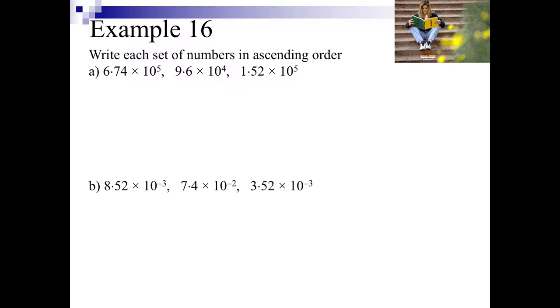So I want you to write these in ascending order. So one of the things that you can look at, there's two different ways you can do this. The first way is to write them out as whole numbers. So that gives you 674,000, the second one 9.6 times 10 to the power of 4 gives us 96,000, and 1.52 times 10 to the power of 5 gives us 152,000.